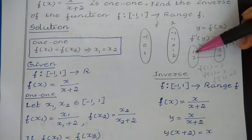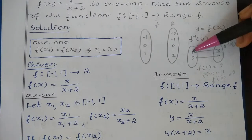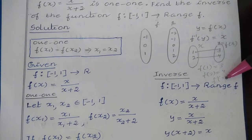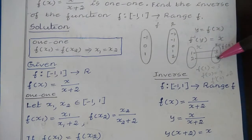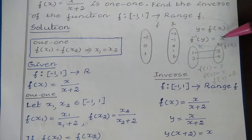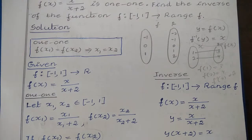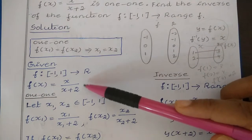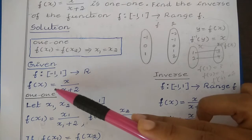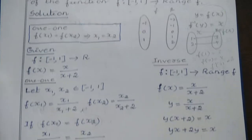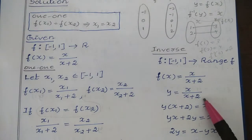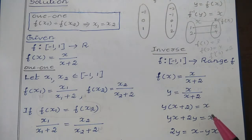So here we need to find the inverse. The function is written in terms of x, and f of x is the y value. So y is written in terms of x, and we have to find x written in terms of y. We have y is equal to x divided by x plus 2.